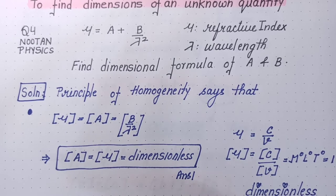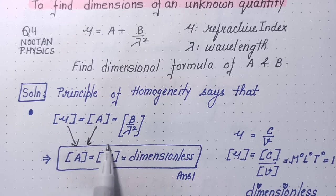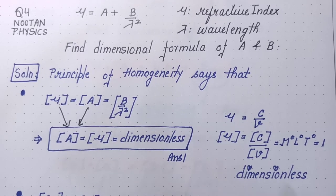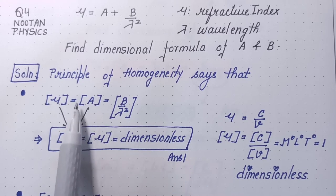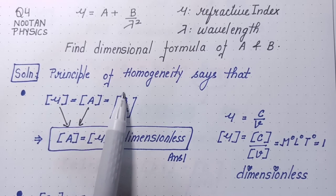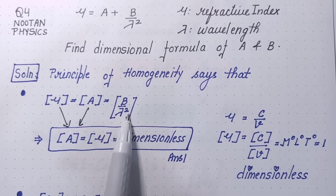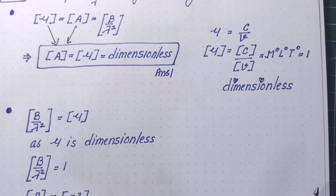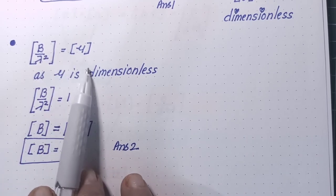These two points give us directly the relation that dimension of A is same as dimension of μ and since μ is speed of light in vacuum upon speed of light in medium, same quantities ratio, so we know that μ is dimensionless quantity. Therefore A is also dimensionless quantity, that is answer number 1. Now, come to this relation, dimension of μ is equal to dimension of B upon λ square. So we simply write dimension of B upon dimension of λ square should be dimensionless.